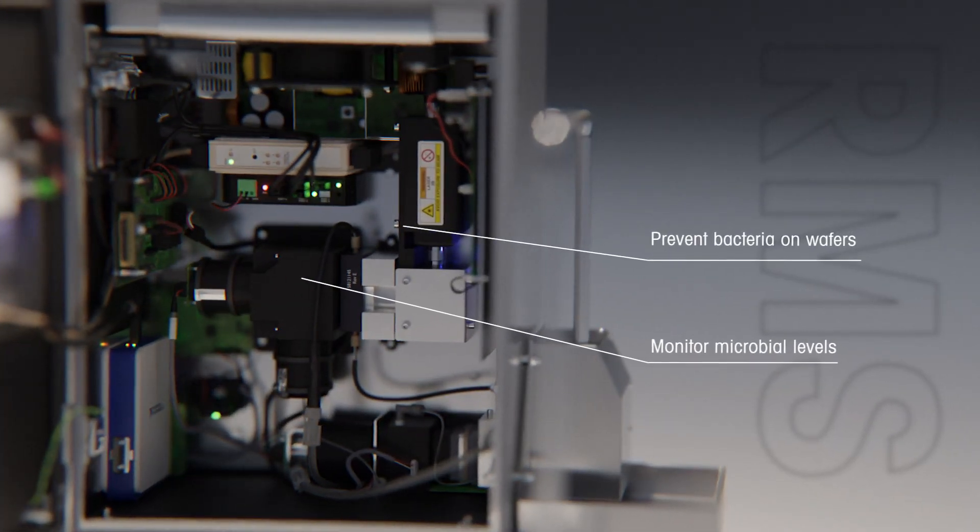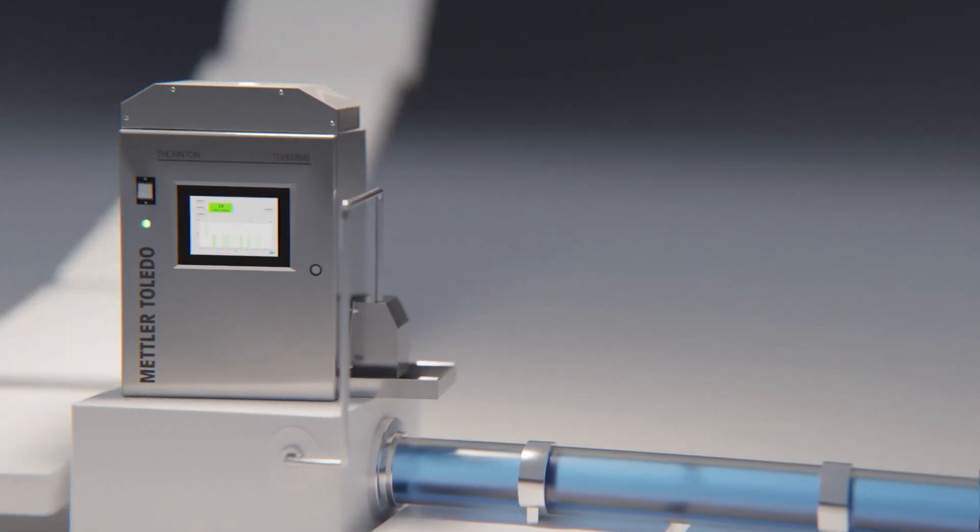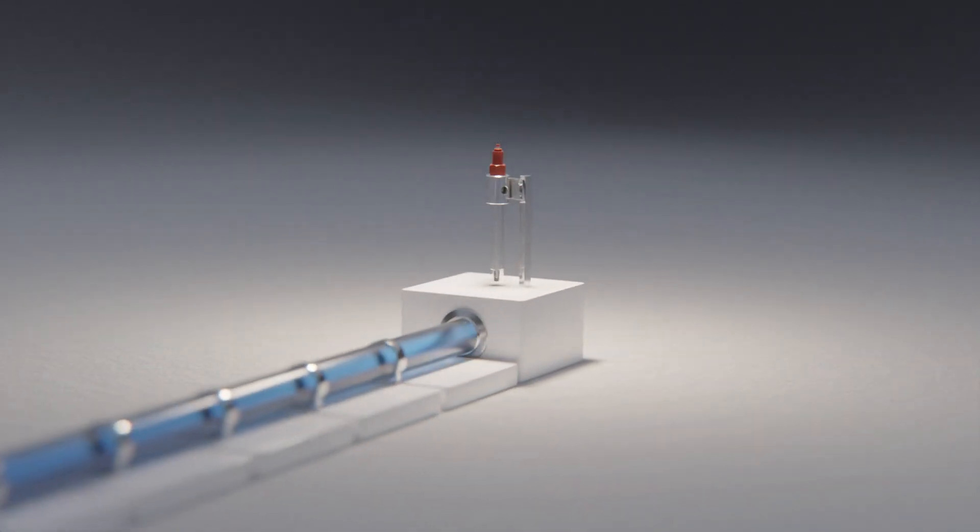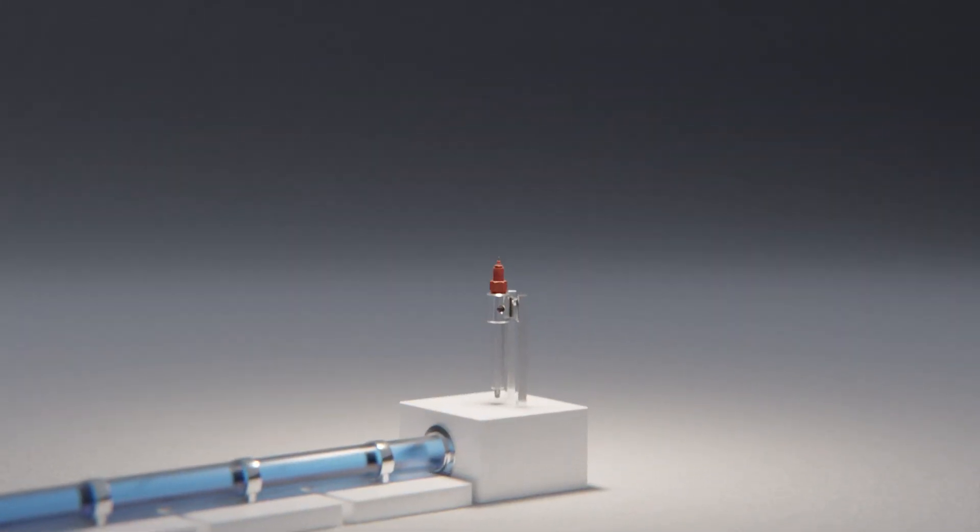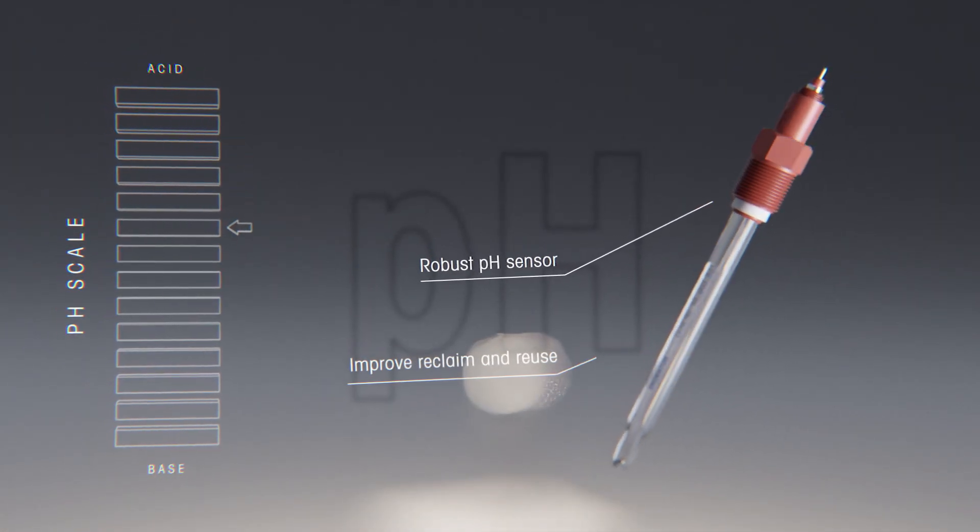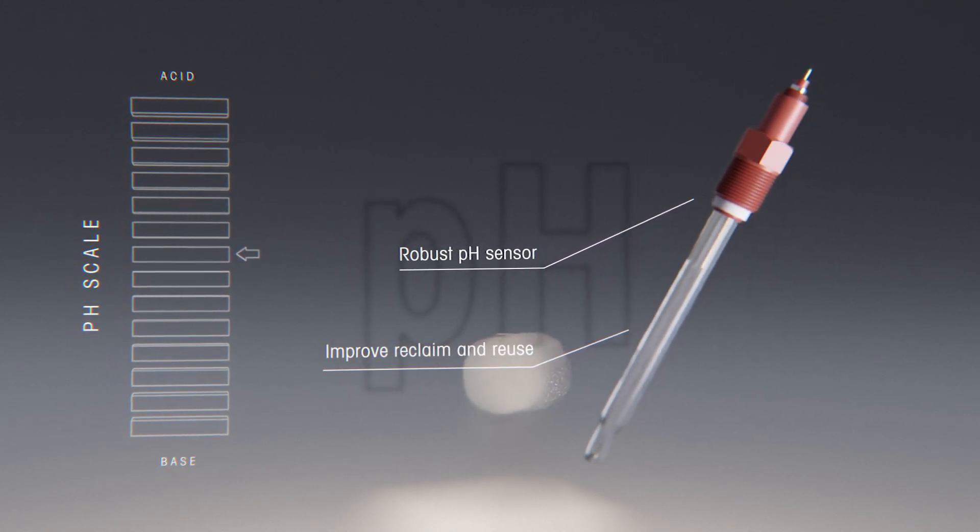When it comes to reclaiming and reusing water, waste streams from production areas contain a variety of chemicals that must be neutralized or removed before the water can be treated further. Hydrofluoric acid is used in several wafer processing steps, and the neutralization of HF wastewater requires a pH sensor robust enough to handle the acidic and corrosive conditions.